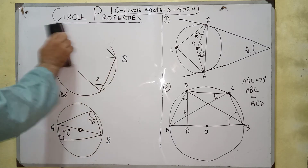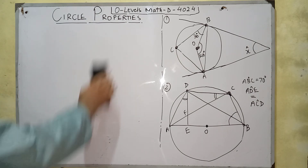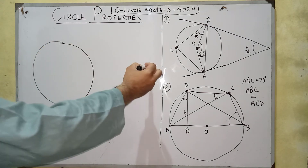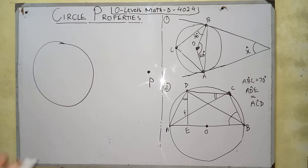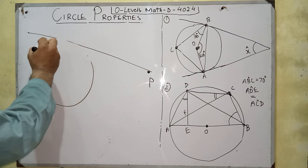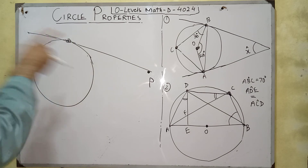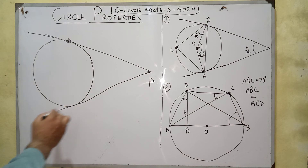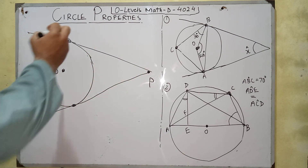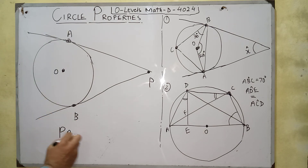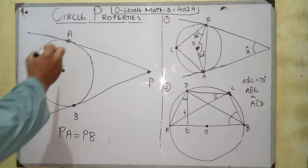The last property is about tangents. If you have a circle and a point P outside the circle, from that point you can draw exactly two tangents to the circle. If the tangents touch the circle at points A and B respectively, then PA equals PB — both tangents drawn from an external point to a circle are always equal.